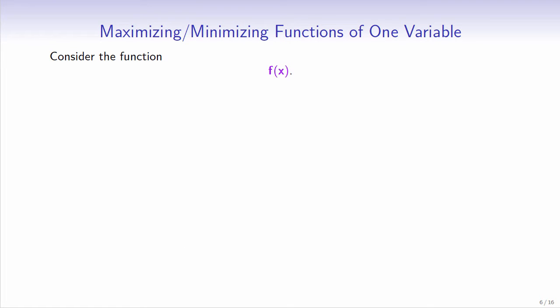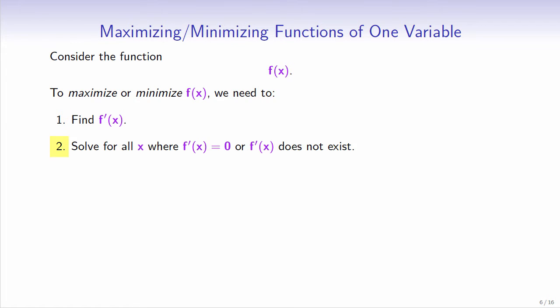Consider the function f of one variable x. To maximize or minimize f, there are four steps that we need to follow. Step 1: find the first derivative of f. Step 2: solve for all x where the first derivative of f equals zero or does not exist. These are called the critical values of f.